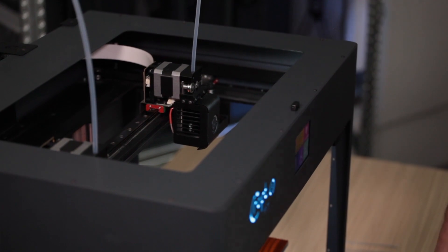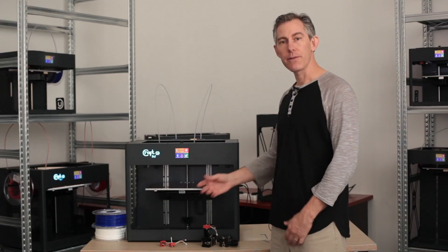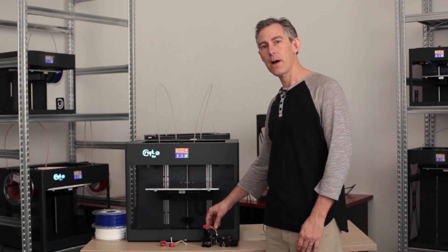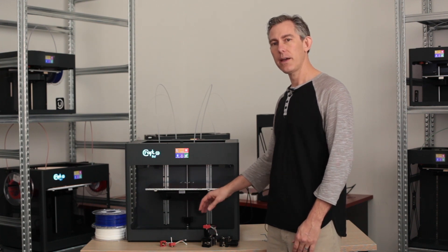Now that we've installed the new hot end, we're ready to start Z calibration. First thing we'll do is plug the machine back in and turn it back on. Thank you for taking your time and listening to me talk about the new benefits of the CraftBot 3 nozzle, hot end, and heat brake.